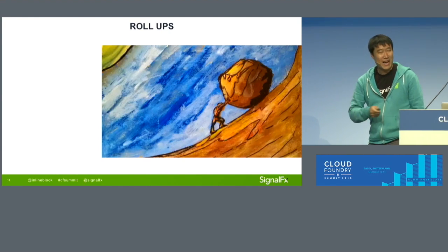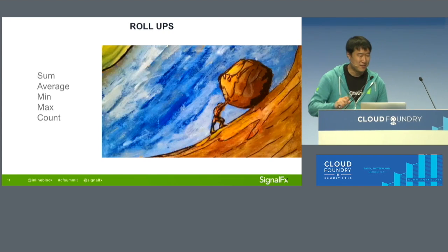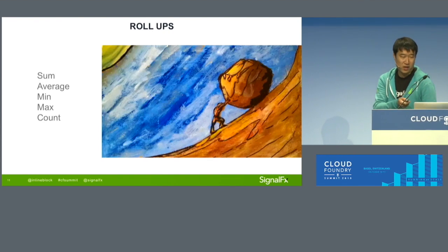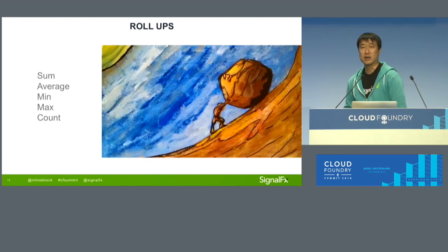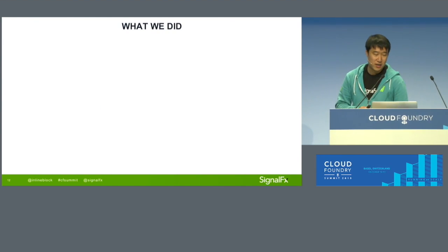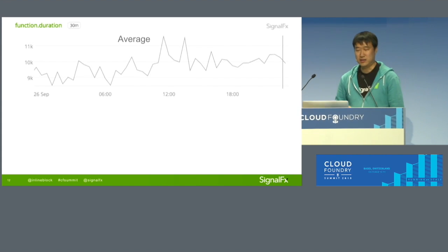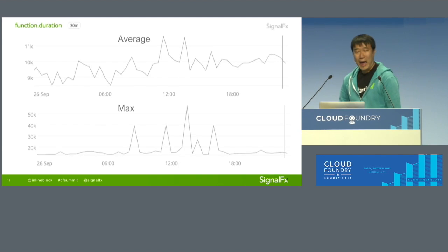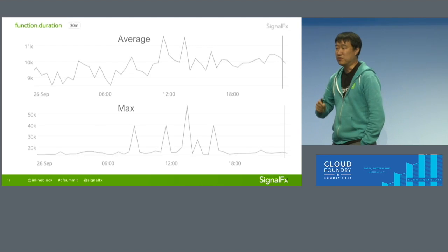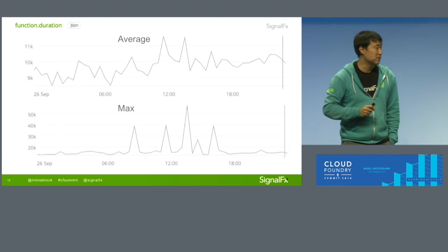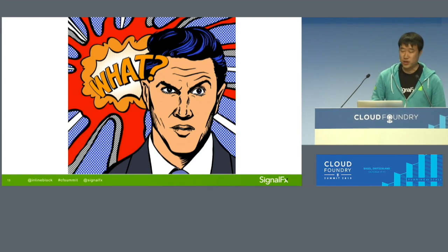Rollups is the action of operating on multiple data points into one data point. It has many meanings depending on the operation used, and you have the flexibility of picking the one you want depending on the application. What we did: I changed the average I had before on each function duration data point to max. What happened is that at each point in time, you can see that the maximum time spent on each function actually spiked quite a lot. So we wanted to figure out what was going on.